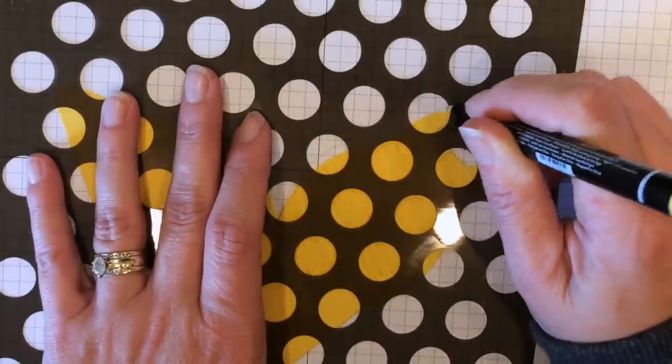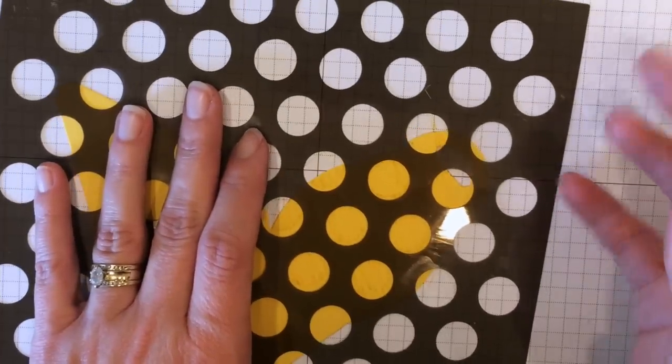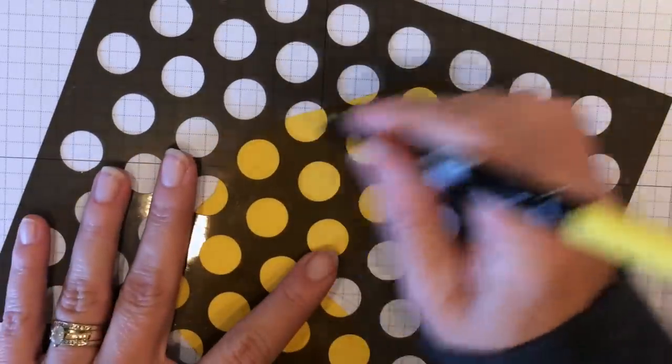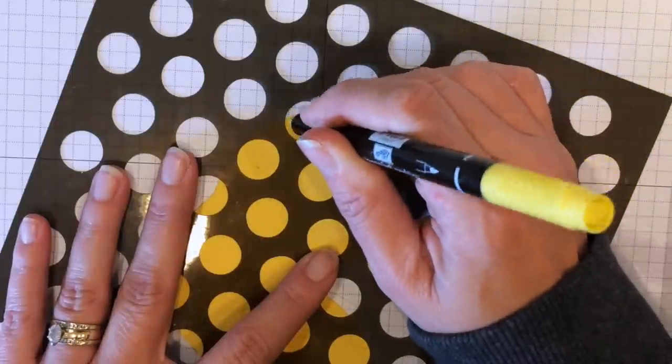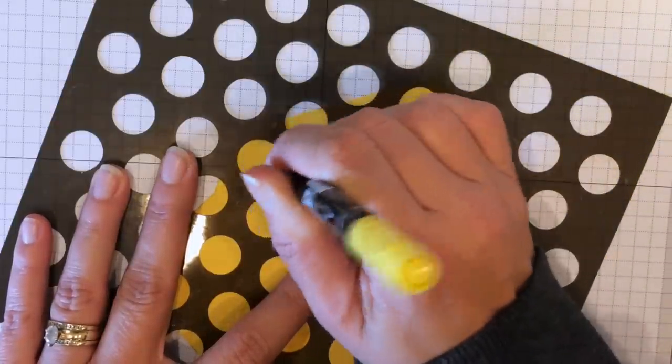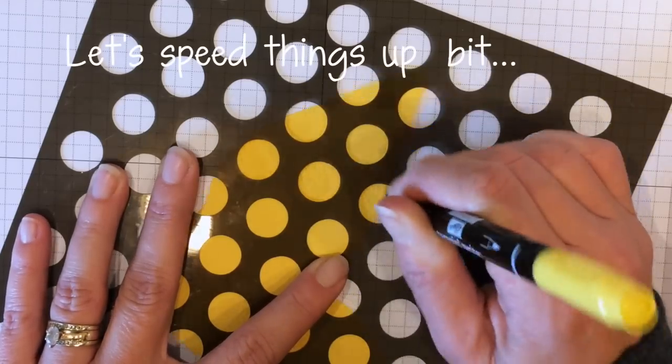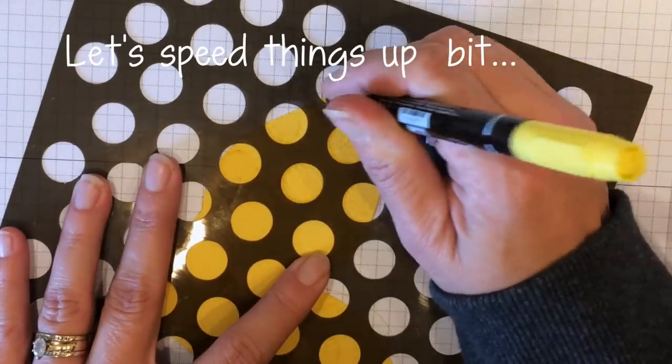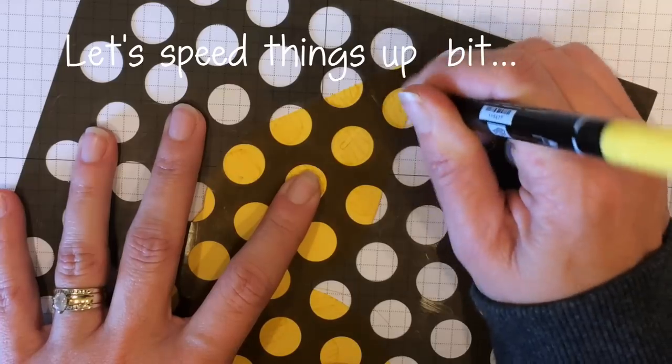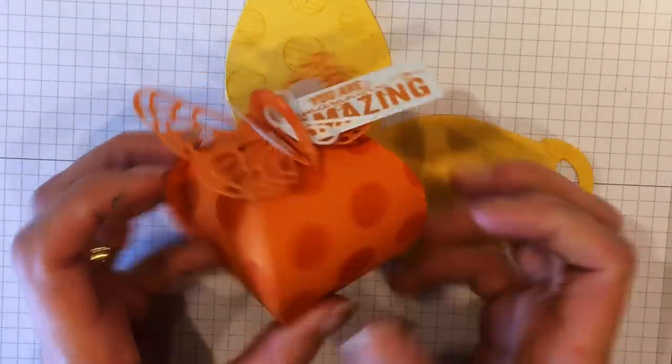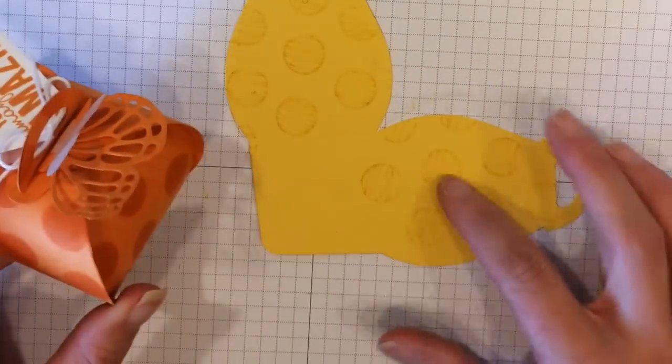And one thing I do notice when I do these, I like for my scribbles to all go the same direction. So I don't want to scribble this way and then scribble this way. But whatever you decide to do, just do it the same way on all of the circles. Alright, and there you have it. Another way to do this, like I did on this one, is just to do your dauber in those circles. And that is, it's faster that way. But I think I like this way better.